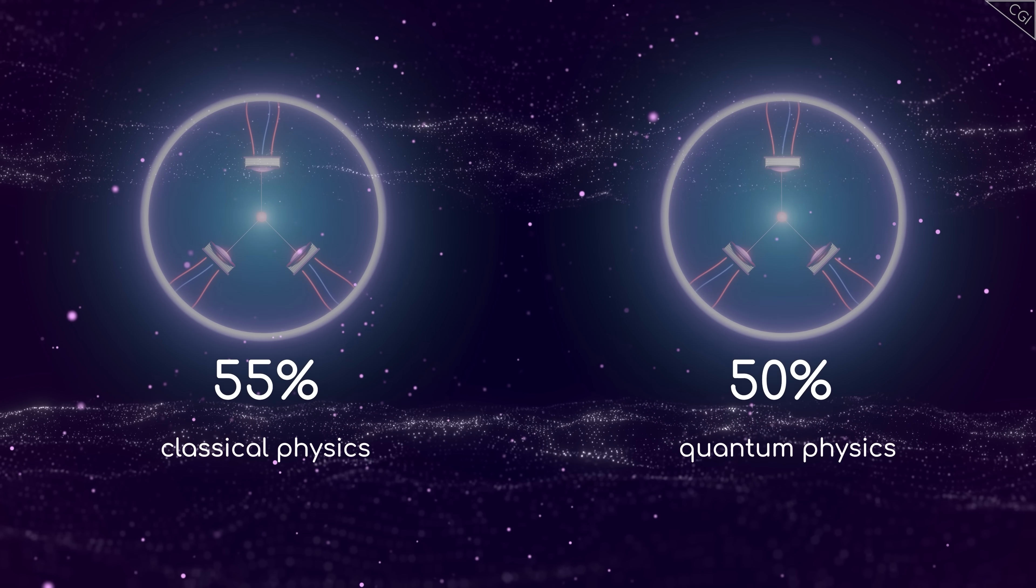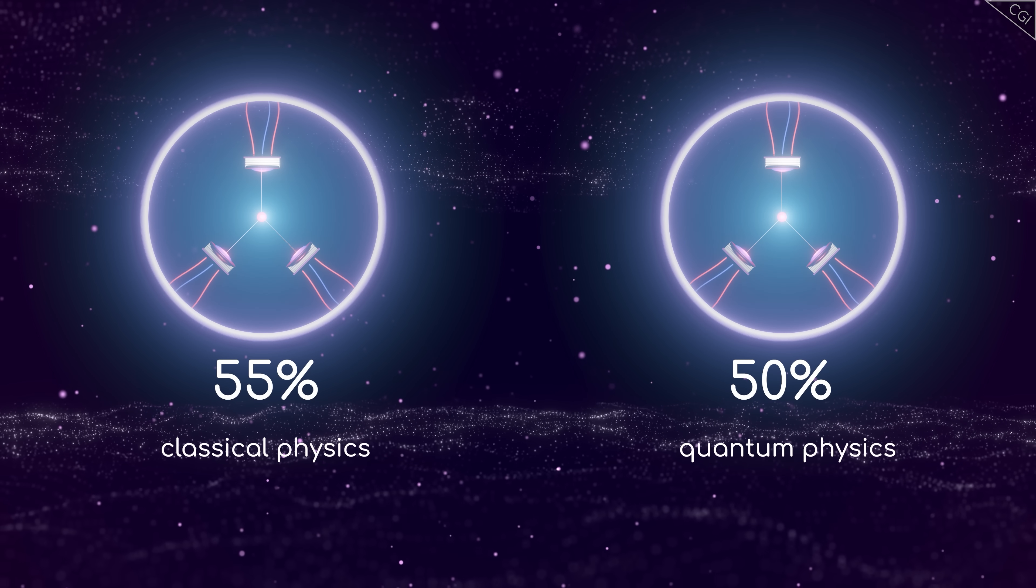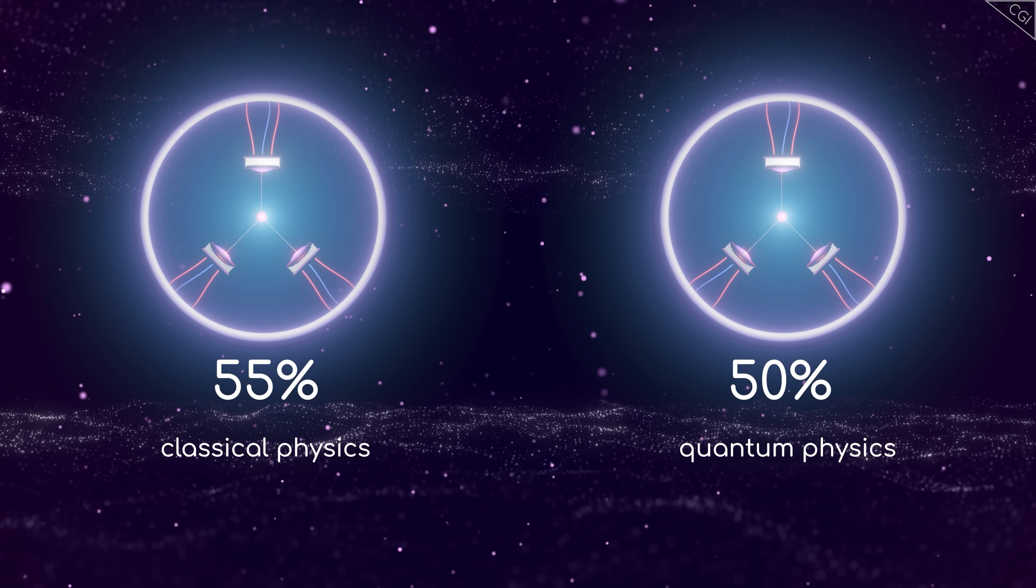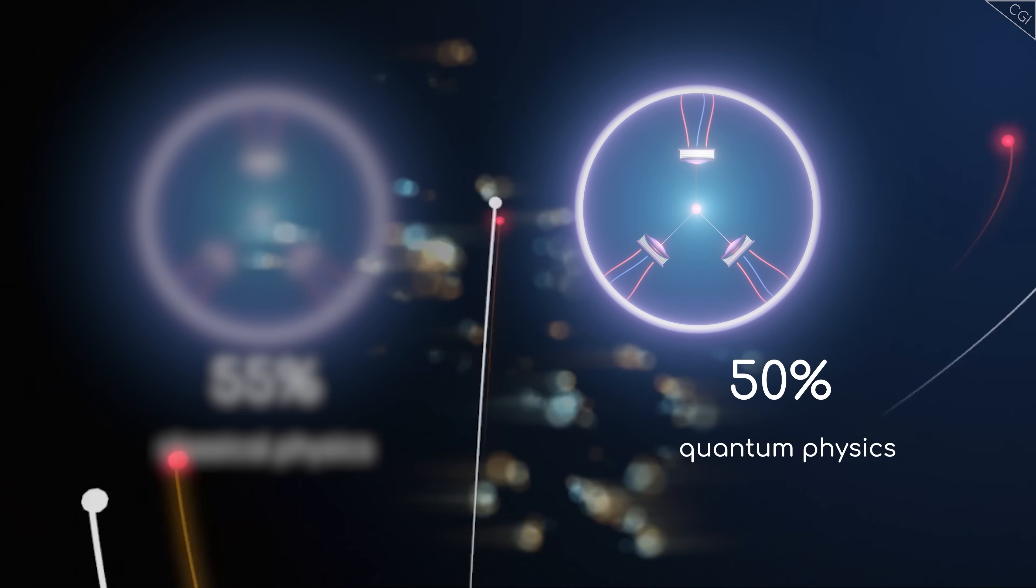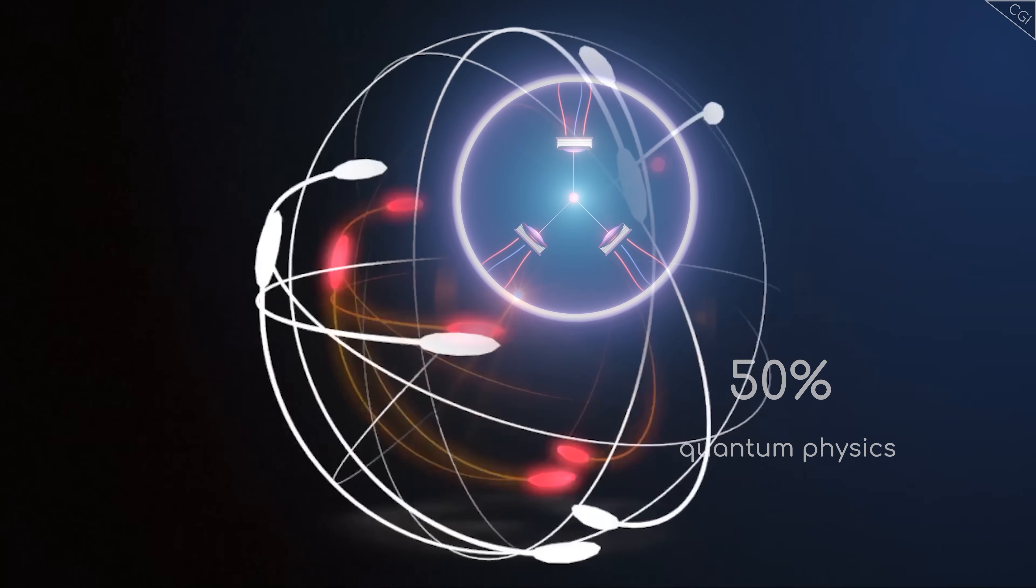This percentage difference was the key. By quantum entangling particles, and running this test over and over again, you could now see which percentage was correct. And it turned out, the winner was quantum physics. Particles were just apparently making up their spin results on the spot, which is spooky.